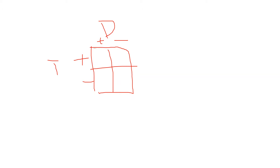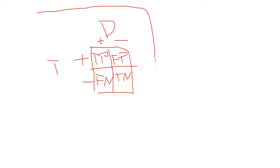Some people have the disease and get tested positive — that's a true positive. Some people do not have the disease and get tested negative — that's a true negative. Sometimes we make mistakes: someone does not have the disease but gets tested positive — that's a false positive. Sometimes they do have the disease but get tested negative — that's a false negative. This is the two-by-two table we're working with.